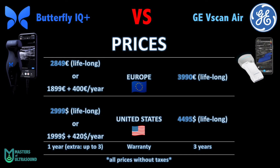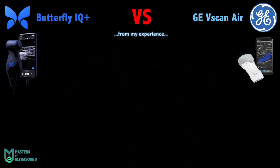Now that we've seen how they perform clinically, let's talk about pricing. The Butterfly IQ Plus is available for $2,999 in the United States or €2,849 in Europe, with a lifelong subscription — the only subscription option also available for the Vscan. The Vscan Air costs $4,495 in the United States or €3,990 in Europe. Note that these prices are without taxes, so your actual price will vary depending on your country.